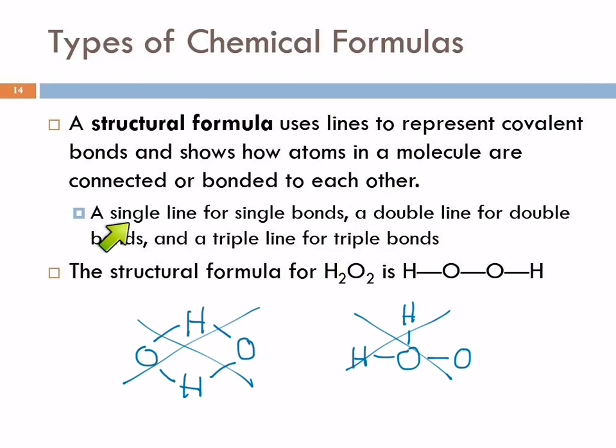In structural formulas, we use a single line for single bonds, a double line for double bonds, and a triple line for triple bonds. So if we had double bonds, we would draw it like this with double lines. Two lines means a double bond, and we'll learn more about those later.